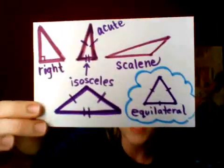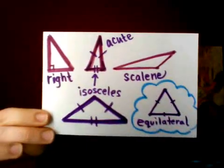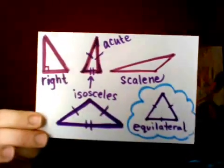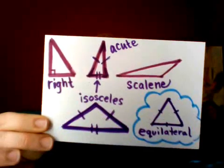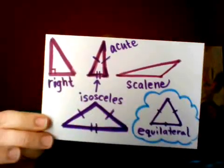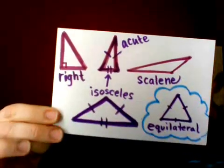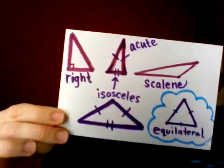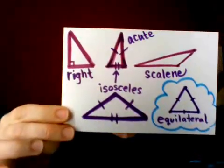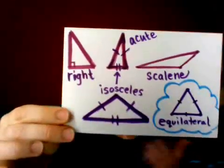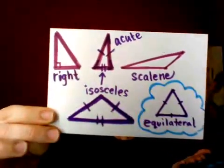I put a poofy angel cloud around the equilateral triangle because all three sides and all three angles are the same. That equilateral triangle is going to definitely have three lines of symmetry, and we'll talk about that later. So these are just my favorite triangles, and you can see how the angles apply to the triangles too.